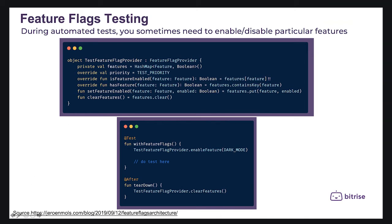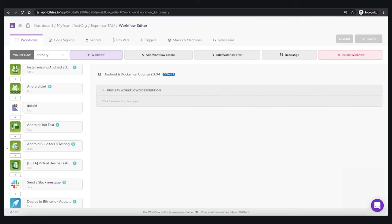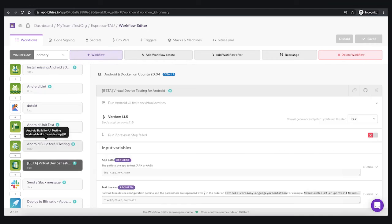During automated tests you sometimes need to enable or disable particular features to be able to test them. For example, in Android, if you are using the Espresso test framework, you can add a function before your test to enable the feature flag, and in the teardown you can disable it again. Then you can run your UI tests in your CI/CD pipeline with Bitrise.